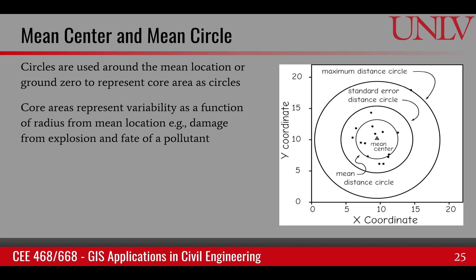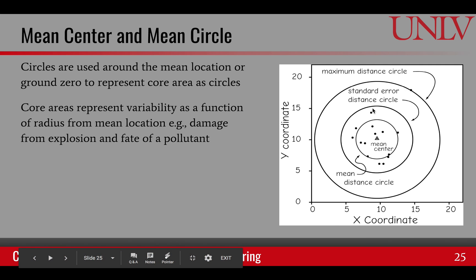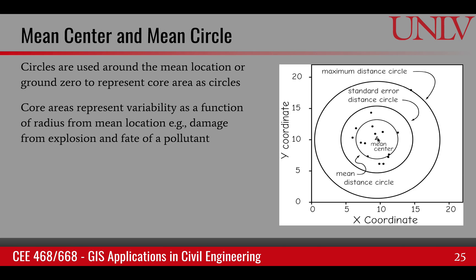There are a couple of types of core area mapping techniques. One is called the mean center and mean circle. If we have some sample points, we find the mean point and then circles represent some form of variation with distance. For example, if this was the source of a pollution, these different radii could be the fate of the pollutant. Or if this was an explosion, these radii could be the damage impact of that explosion. This is one way of showing the core areas.